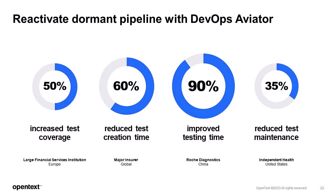Customers we haven't spoken to in a while will be very interested in the massive leverage that DevOps Aviator can bring to their team. Roche Diagnostics improved regression testing time with UFT One AI by 90%. A major insurer reduced test script creation time using UFT One AI by 60%. A large financial services institution harnessed UFT One AI to increase test coverage by 50%. Independent Health leveraged UFT One AI to reduce test maintenance by more than 35%. UFT One AI allowed Endress+Hauser to delegate testing to colleagues without requiring deep testing knowledge.